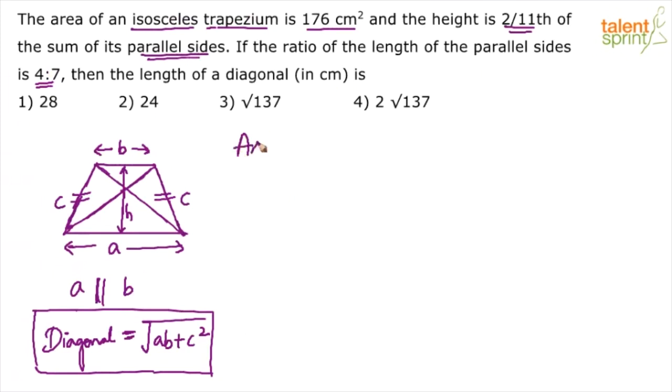Now what is the area? Area of a trapezium is A plus B by 2, average of the two parallel sides into the height, H. But height is given as, according to the question, height is equal to 2 by 11 into A plus B. Yes or no? 2 by 11 into A plus B. So let us substitute this height. Height is given in terms of parallel sides. 2/11th of the sum of its parallel sides. So let us substitute this H in this formula here.